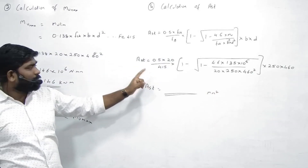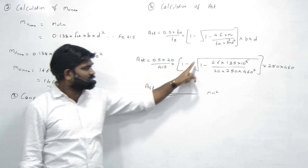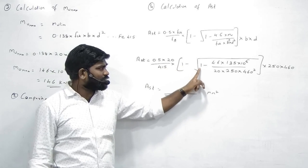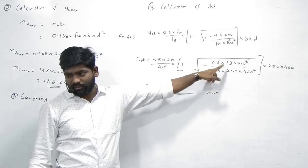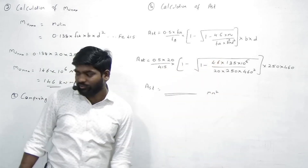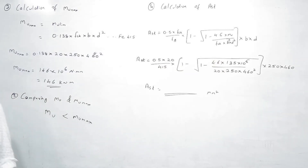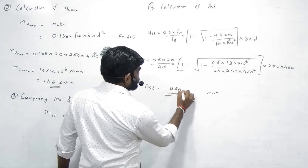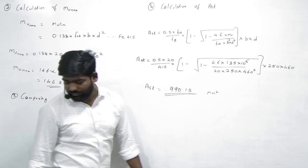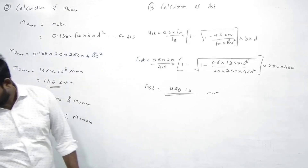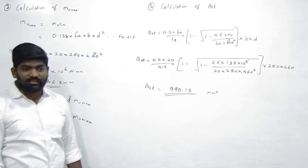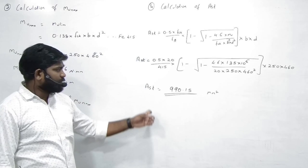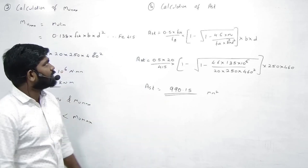Calculator pe directly answer aayega. Bracket jahan daala hai wahan daalna hai: 1 minus under root, fraction wala button use karo, value substitute karo. Verify the answer — right hai: AST = 990.15. Sum khatam ho gaya, aapko AST puchha tha.